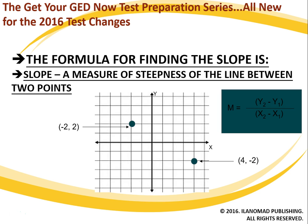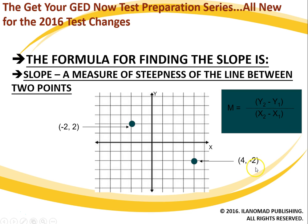So the slope of a line — here's the formula for it — it's a measure for finding the steepness of the line between two points. Here you can see on our coordinate plane we have two points, and we want to measure how steep is the line between these two points. The formula for doing that is y2 minus y1 over x2 minus x1. Now a lot of people are going to get confused: which one is y2 and which one is y1, which one is x2, which one is x1? It doesn't matter.